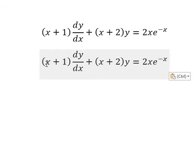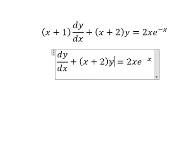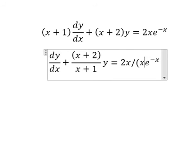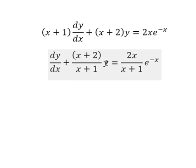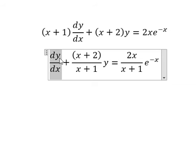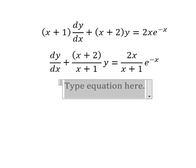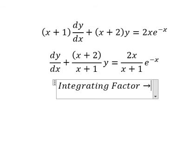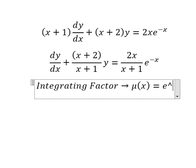We divide both sides by s plus one. Next we have y and the first derivative of y. We can use the integrating factor, so we need to find mu(s) equals e to the power of the integration.